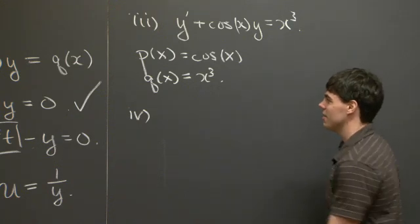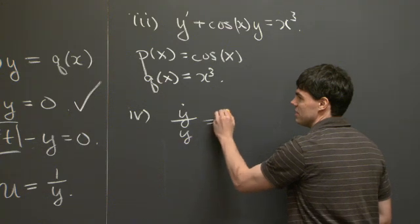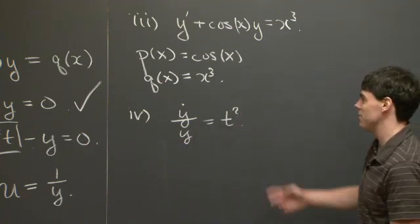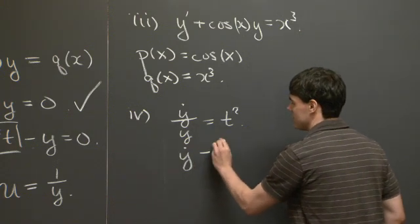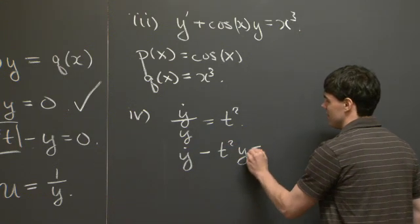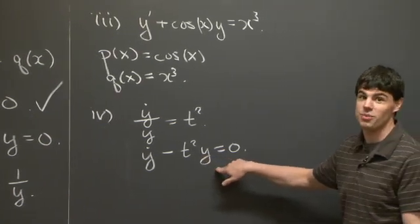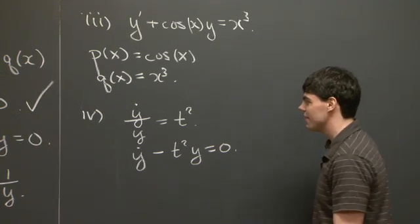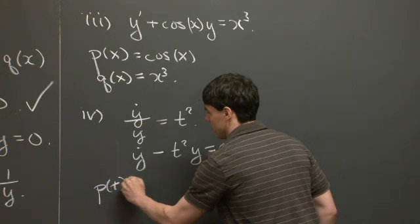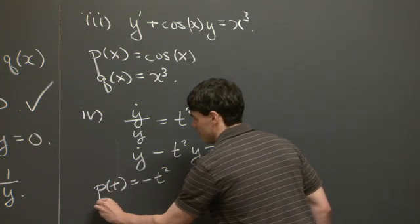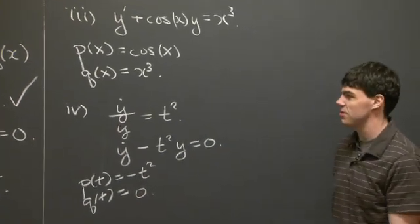For part 4, we have y-dot divided by y equal to t-squared. It doesn't appear to be linear, but we can multiply through by y and rewrite things. This equation is equivalent to y-dot minus t-squared times y equals 0, which is linear because p(t) can be identified with negative t-squared and q(t) with 0.